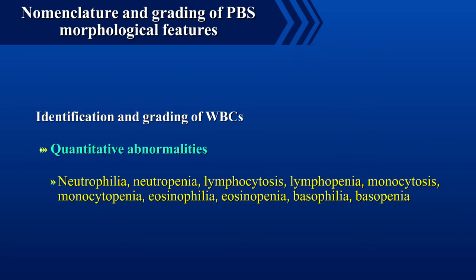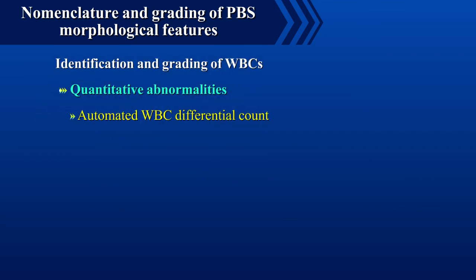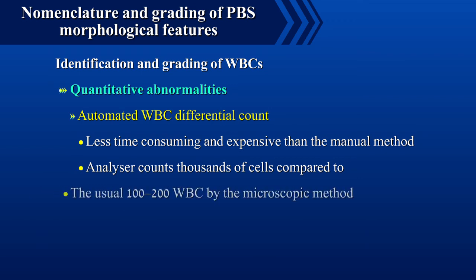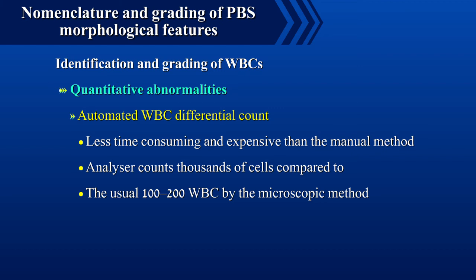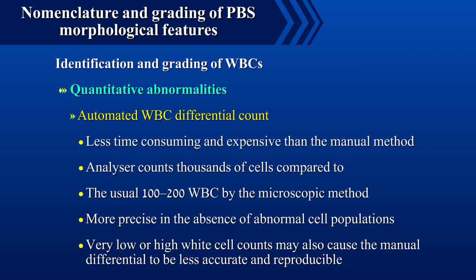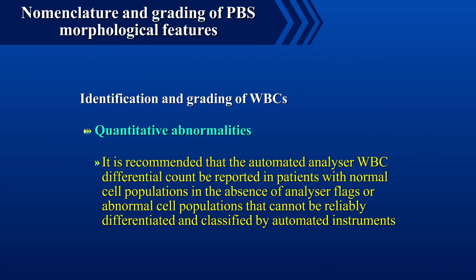Neutrophilia, neutropenia, lymphocytosis, lymphopenia, monocytosis, monocytopenia, eosinophilia, eosinopenia, basophilia and basopenia are quantitative abnormalities of white blood cells. The automated WBC differential count is less time consuming and expensive than the manual method, and as an analyzer counts thousands of cells compared to the usual 100 to 200 WBCs by the microscopic method, it will also be more precise in the absence of abnormal cell populations. It is recommended that the automated analyzer WBC differential count be reported in patients with normal cell populations in the absence of analyzer flags or abnormal cell populations that cannot be reliably differentiated and classified by automated instruments.